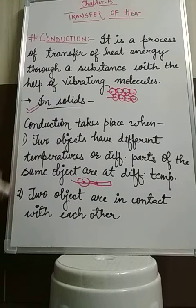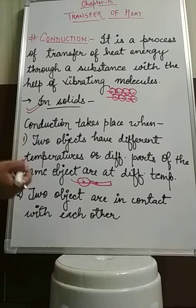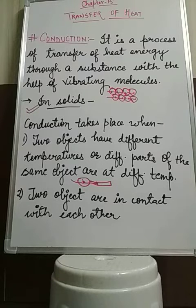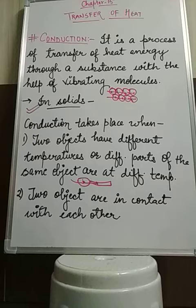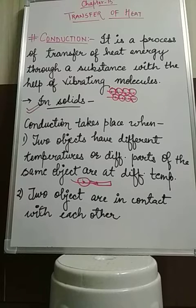Conduction also takes place when two objects are in contact with each other. For example, two objects — one made of metal — metal gets heated up faster. It will transfer the heat energy to the other. Like when your mom prepares lunch and a spoon is also in that food material, the spoon will get heated up by transfer of heat energy from the cooked food item to the spoon. That's how conduction takes place, and we will discuss one activity for it.